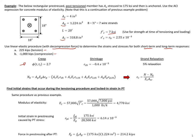The first thing we need to do is calculate the initial strains that occur during the tensioning procedure and the locked-in strain caused by our post-tensioning — specifically the locked-in strain differential between the post-tensioning and our column. To do this we need to find our modulus of elasticity in our concrete, the initial strain in the pre-stressing, and the force in the pre-stressing. This is the same procedure as the last few examples, so we'll go through this quicker.